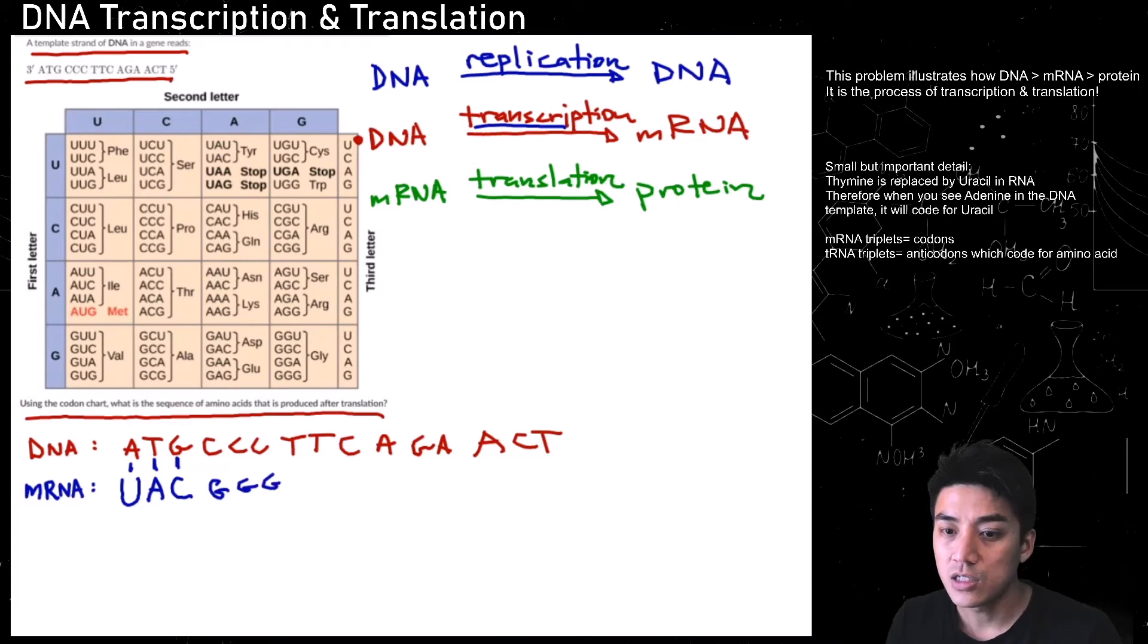And then you get GGG. And we're just doing this in triplets. I think it's easier that way. This will code for AAG. Uracil, once again. Cytosine. Uracil. UCU. And the last triplet, UGA.